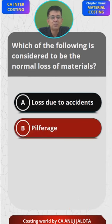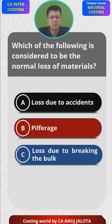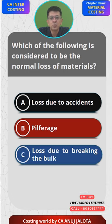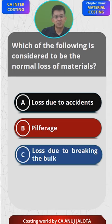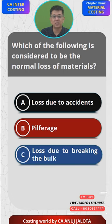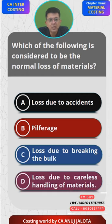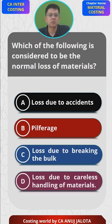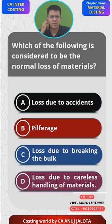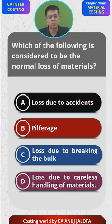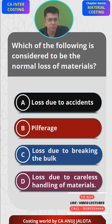There are four options: A — loss due to accidents; B — pilferage, meaning small-scale theft; C — loss due to breaking the bulk, which means when you receive big cartons from the supplier, you break them open to take out the material and some losses happen; D — loss due to careless handling of materials, like when goods are moving within the company and an accident happens and somebody drops them and goods break. To be honest, all four could be answers, but if you have to pick one, which should it be?